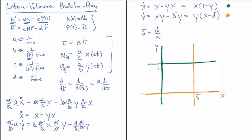Already we can see we have a steady state here at the origin and a steady state at (δ, 1). I'm leaving them empty for now until I figure out if those are stable or unstable steady states. Let's draw in some vectors before we do any more.